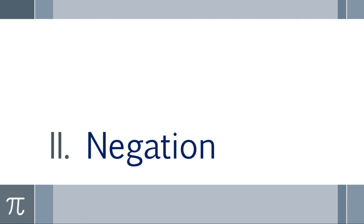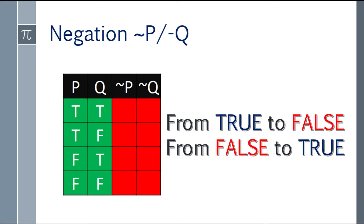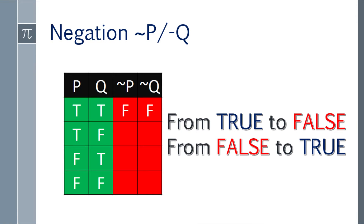All right, second topic: let's tackle negation. With negation, you just negate the value. From true, it becomes false. And from false, it becomes true. So for the first row with two trues, negating gives us two falses.